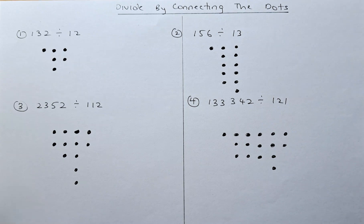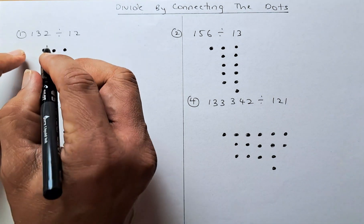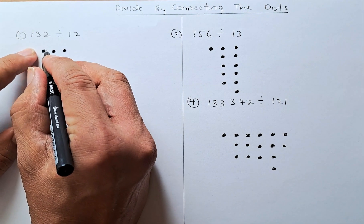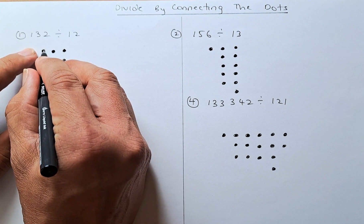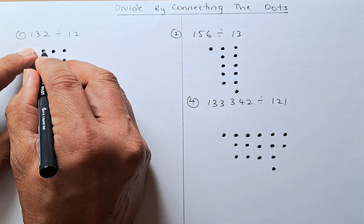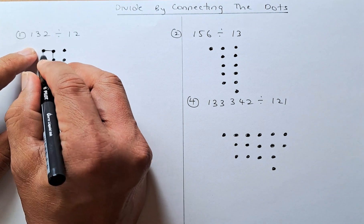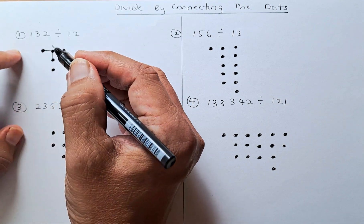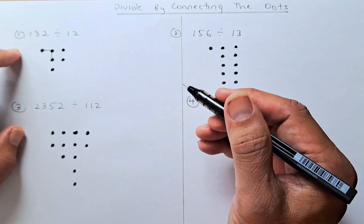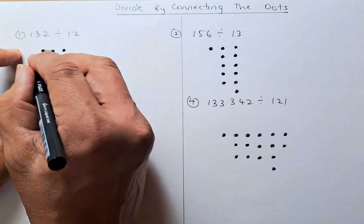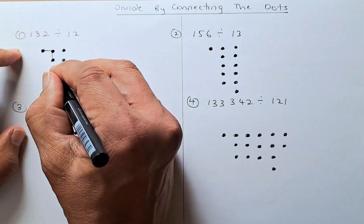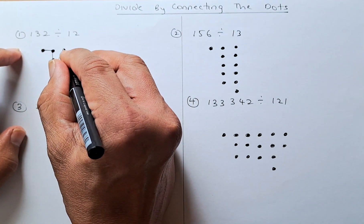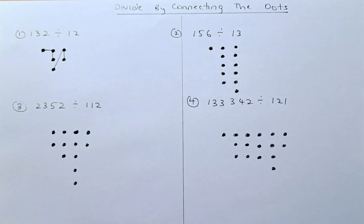Starting from the left: one dot, we are going to connect to two dots in the next column — one, two. So one in the first column and two in the second column, and that's done. For the second connection, there's nothing here so we start here: one dot here and two in the next column, and that will be done.